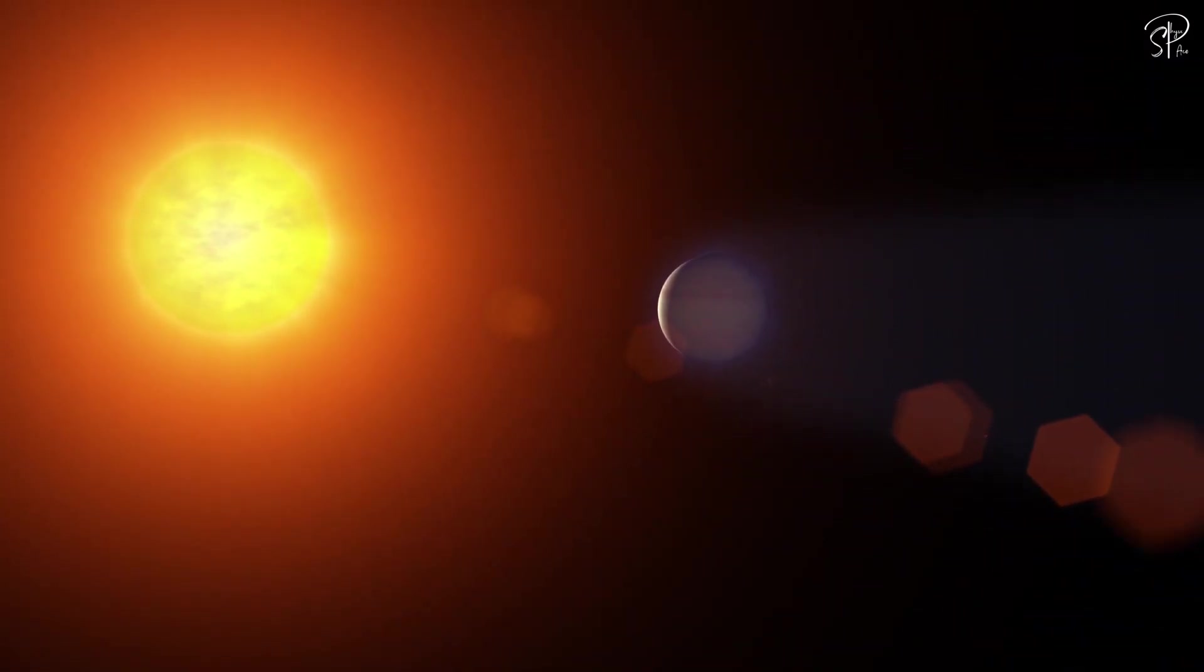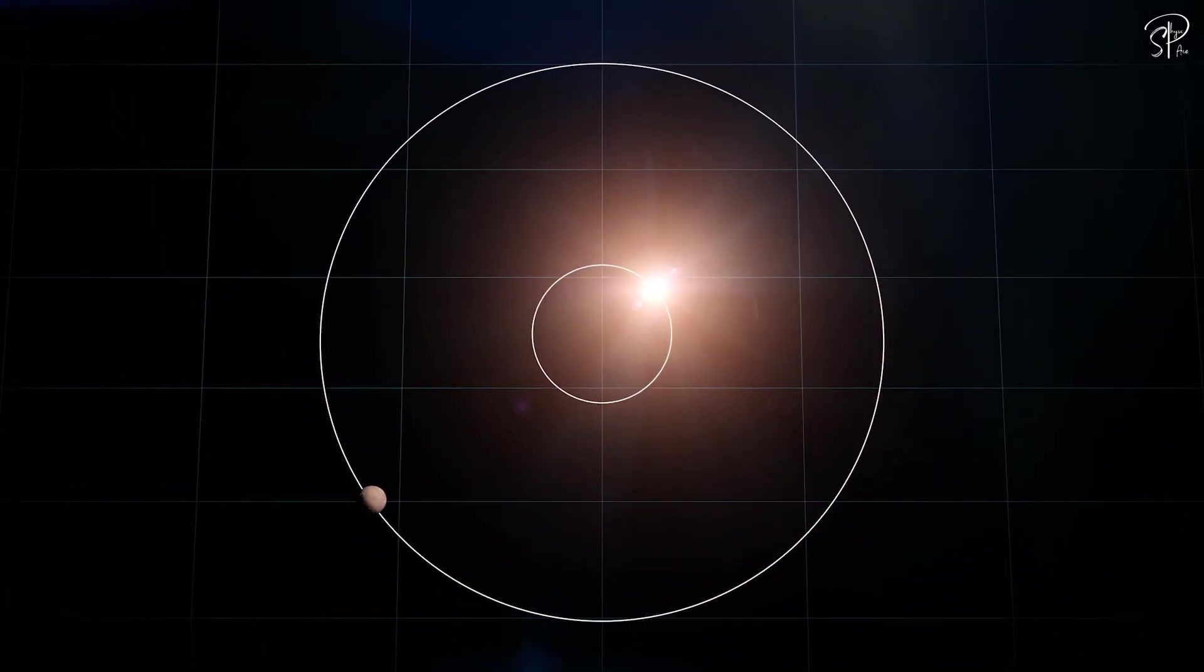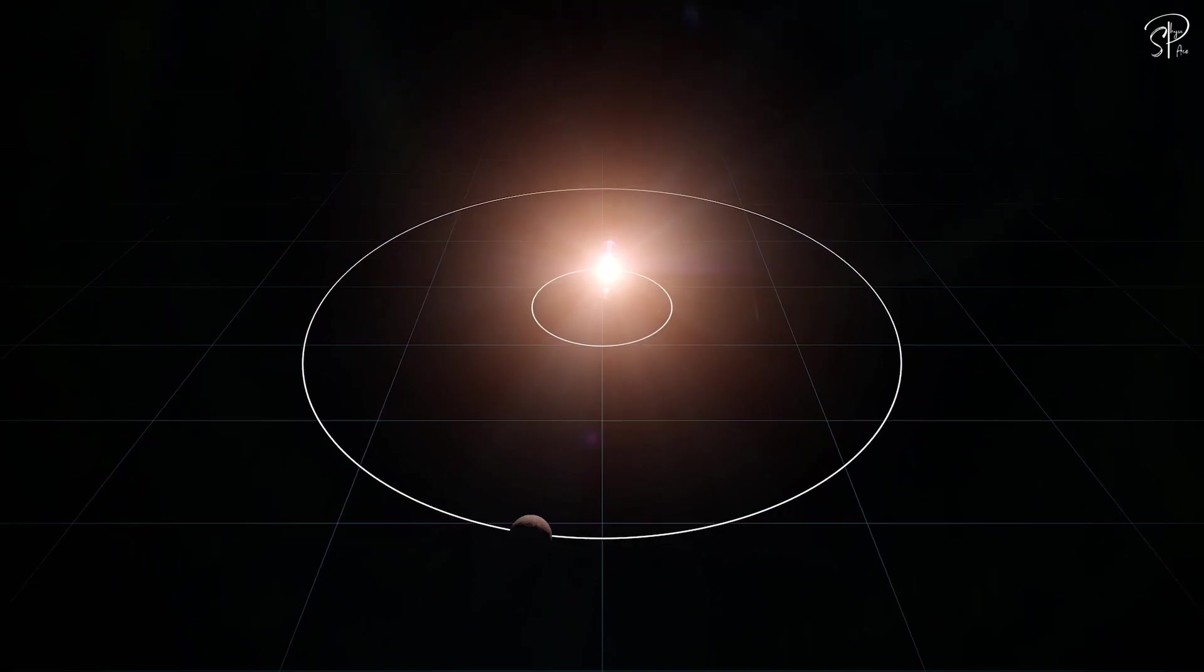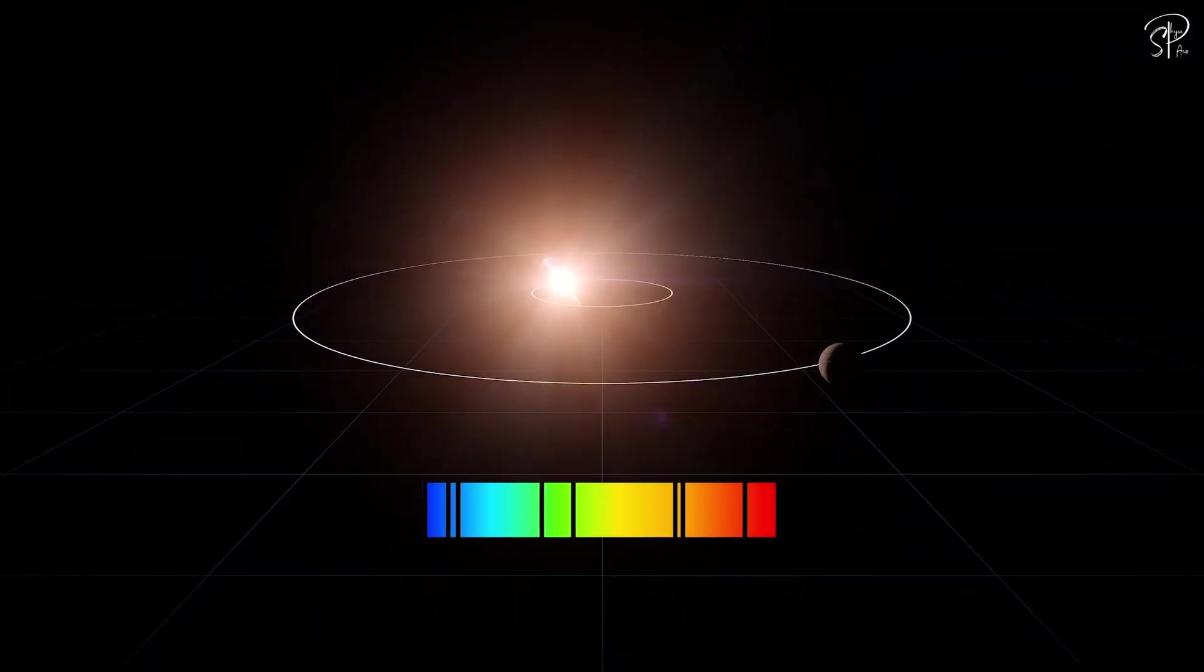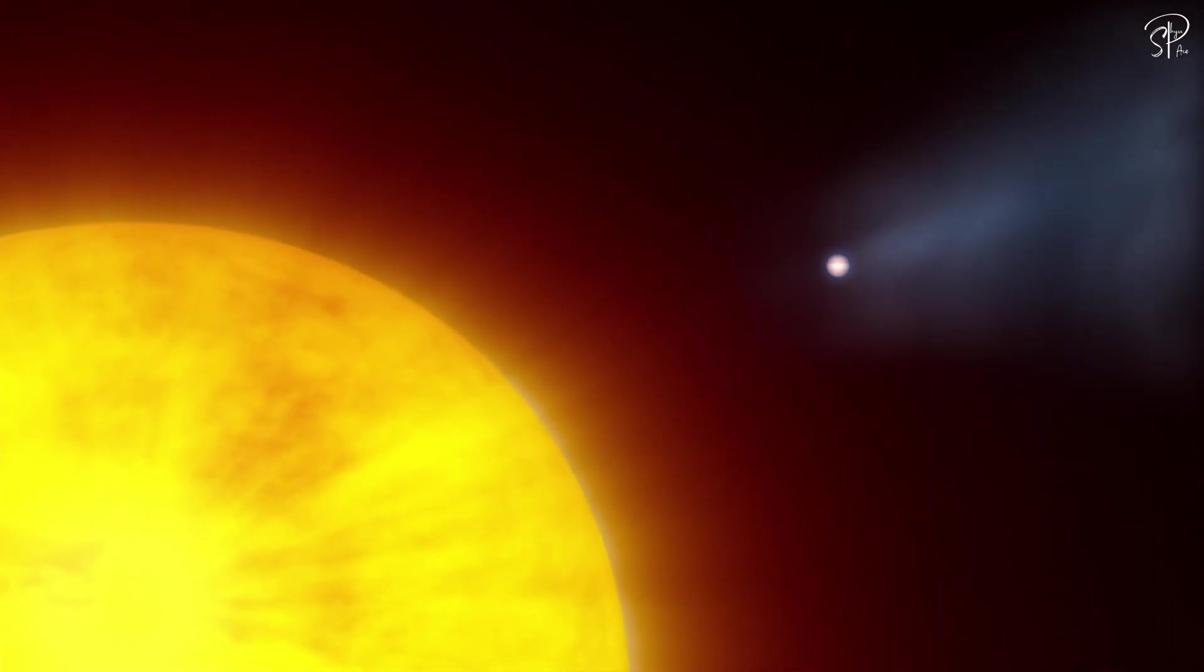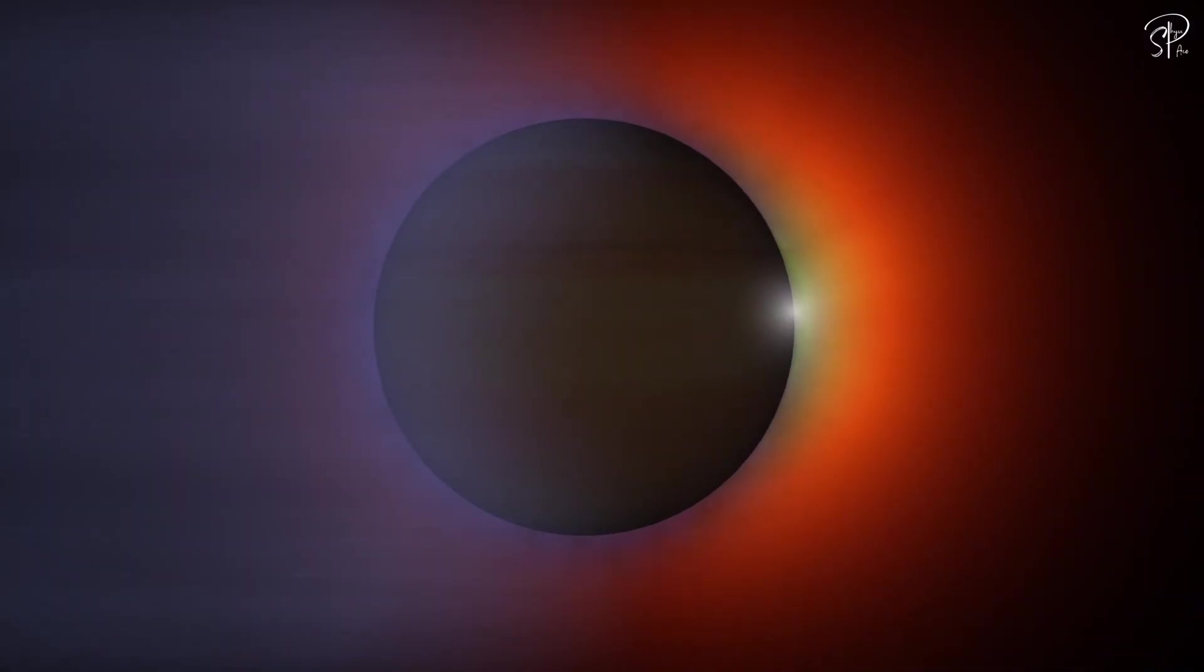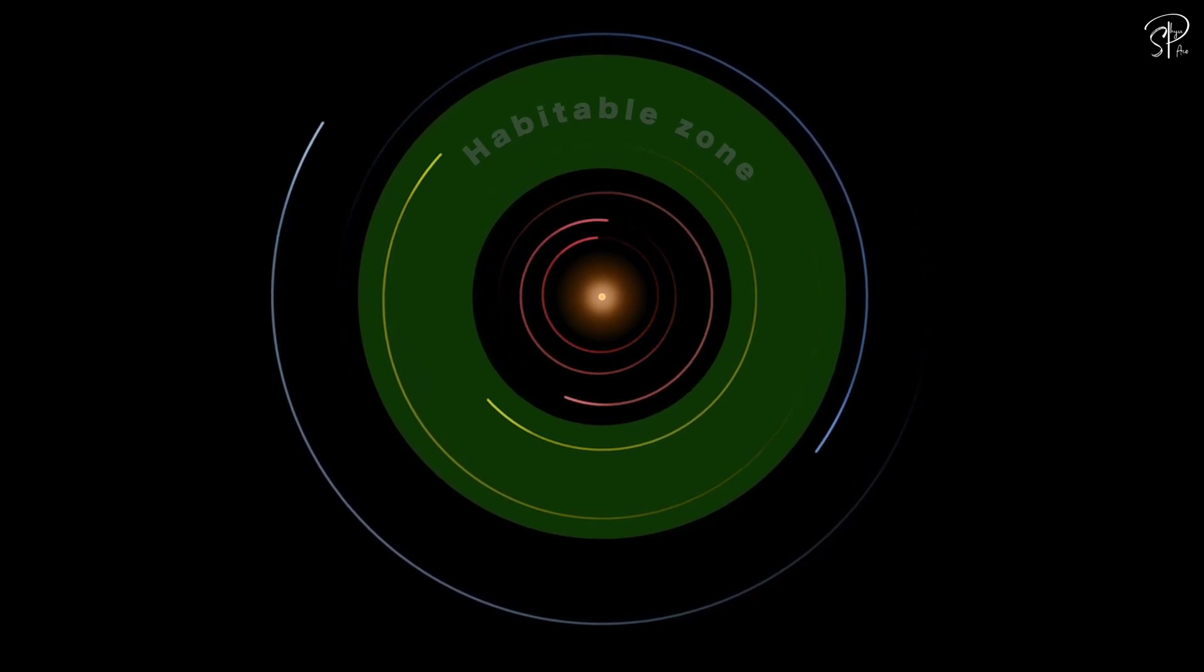The planet orbits its parent star at a distance, completing one orbit every 33 days. But there is also another planet in the system, much closer, with an 8-day orbit. K2-18b, however, resides right in the habitable zone.